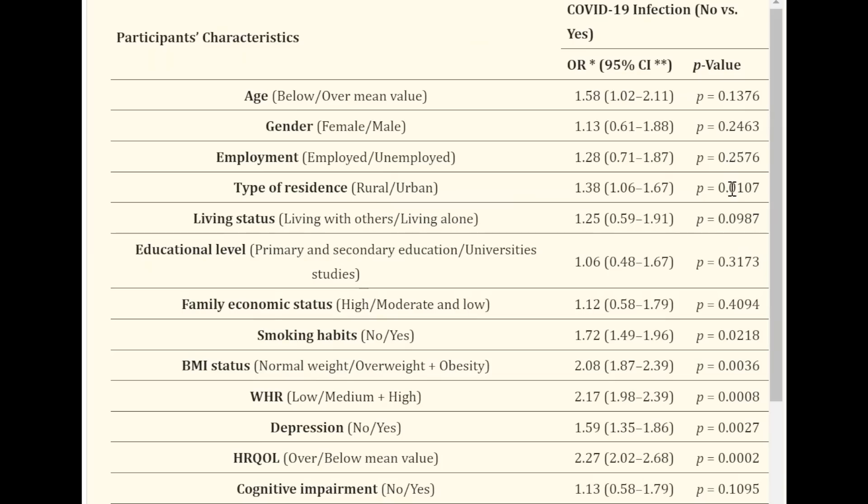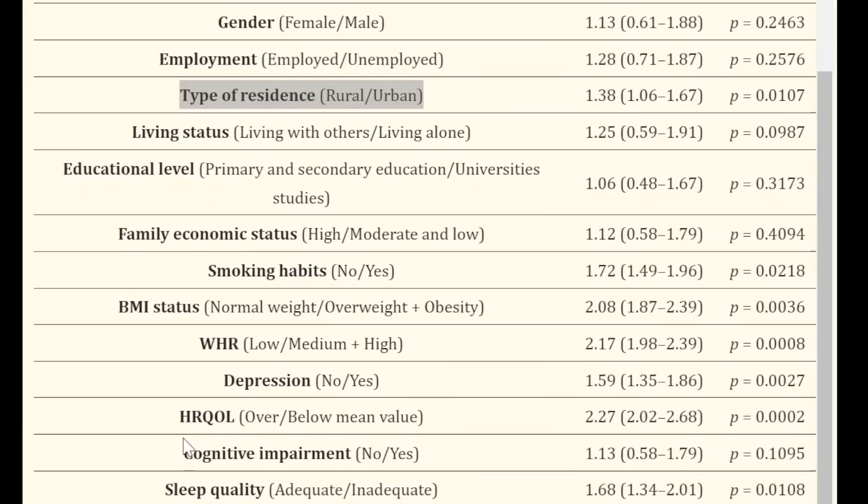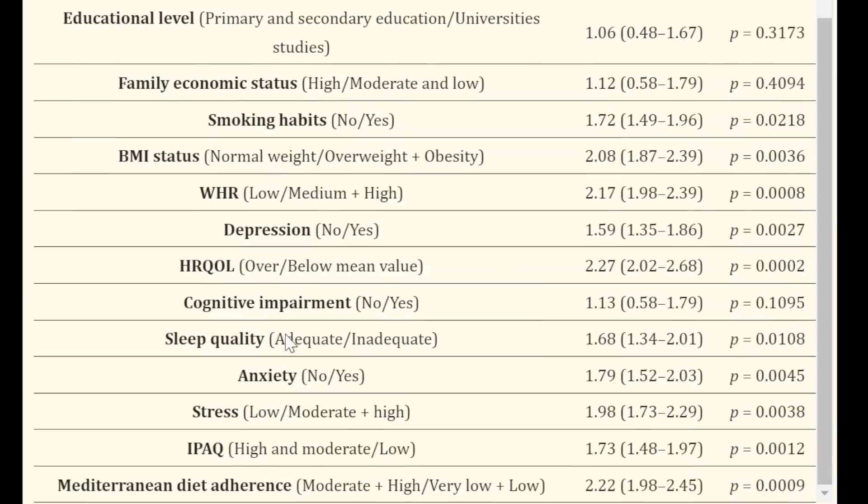You can see here that age in a multivariate analysis was not statistically significant. But what was, was the type of residence. So rural versus urban, with urban having the higher risk, about 38% increased higher risk. Smoking habits significantly increased the risk by about 72%. BMI status increased the risk. And the waist to hip ratio was also very statistically associated with COVID-19 infection. We can also see that with depression as well as the health-related quality of life score.